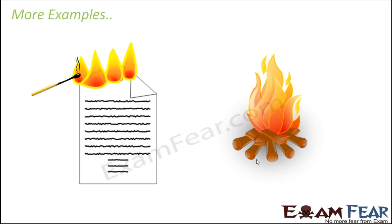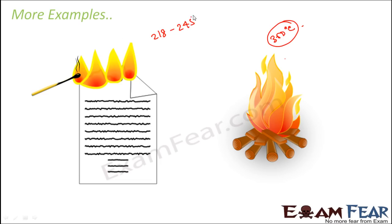If you take a tiny matchstick near a few logs of wood, it might not readily catch fire. But if you bring a burning piece of paper near those logs, the wood will catch fire because the burning paper provides more heat. Since the ignition temperature of wood is a little higher, it needs more heat to reach that ignition temperature. The ignition temperature of wood is around 300°C, while that of paper is around 218 to 245°C. Whichever object has a lower ignition temperature will catch fire more easily.